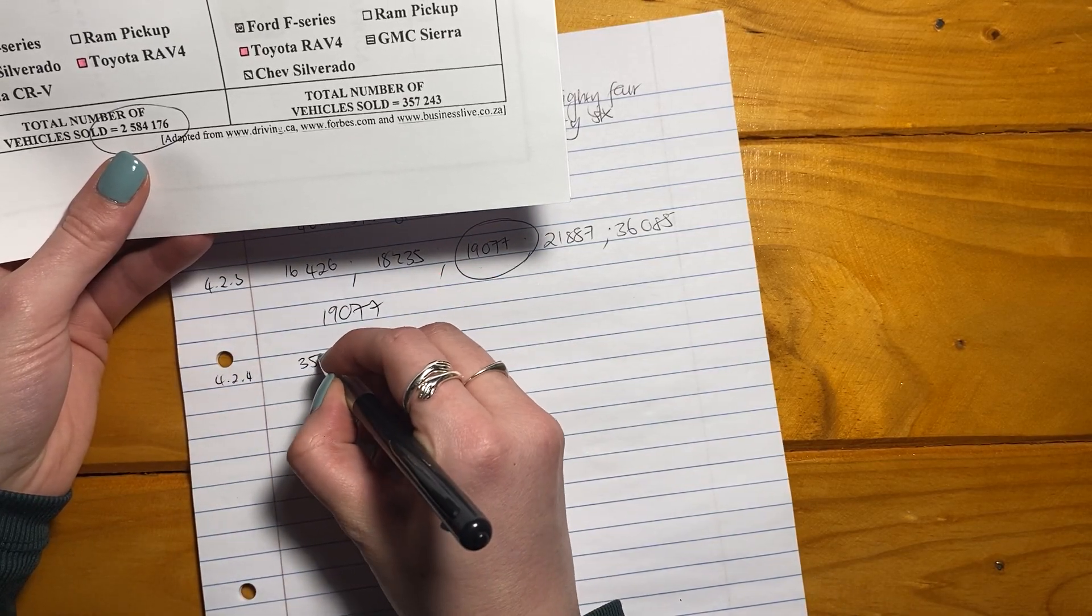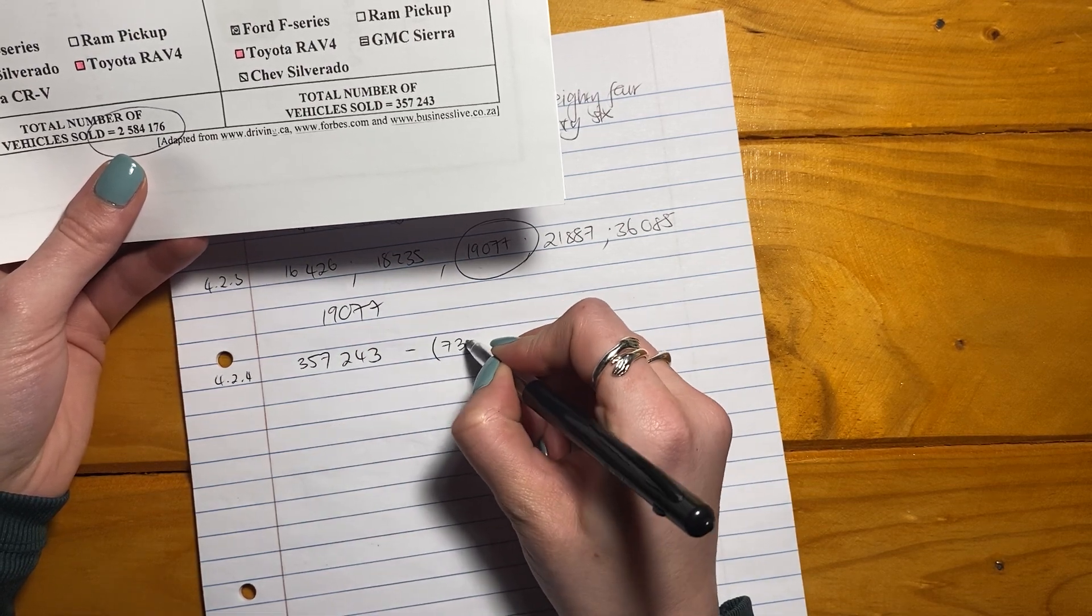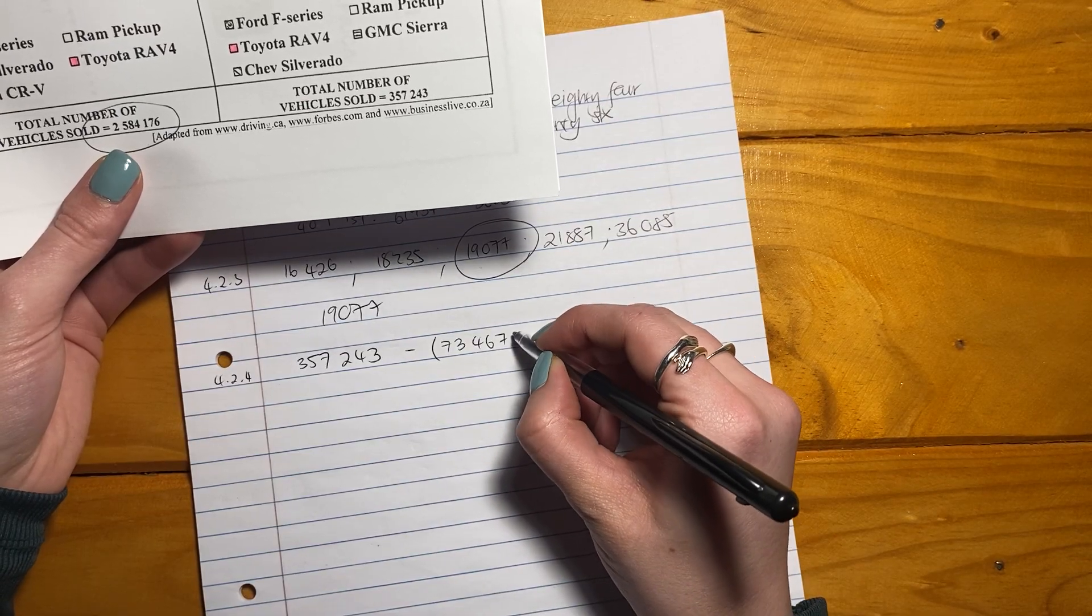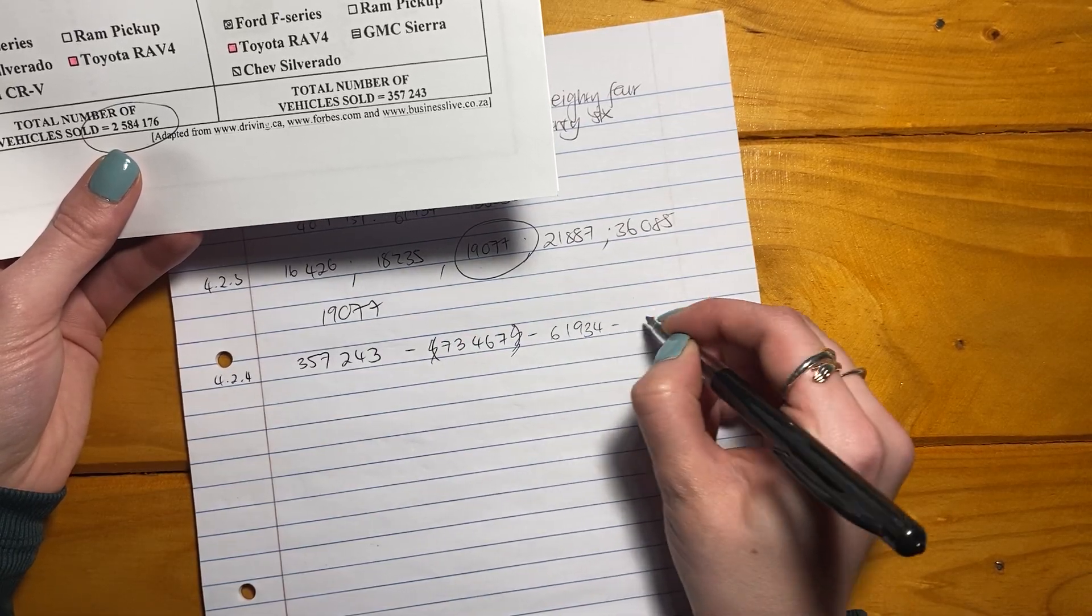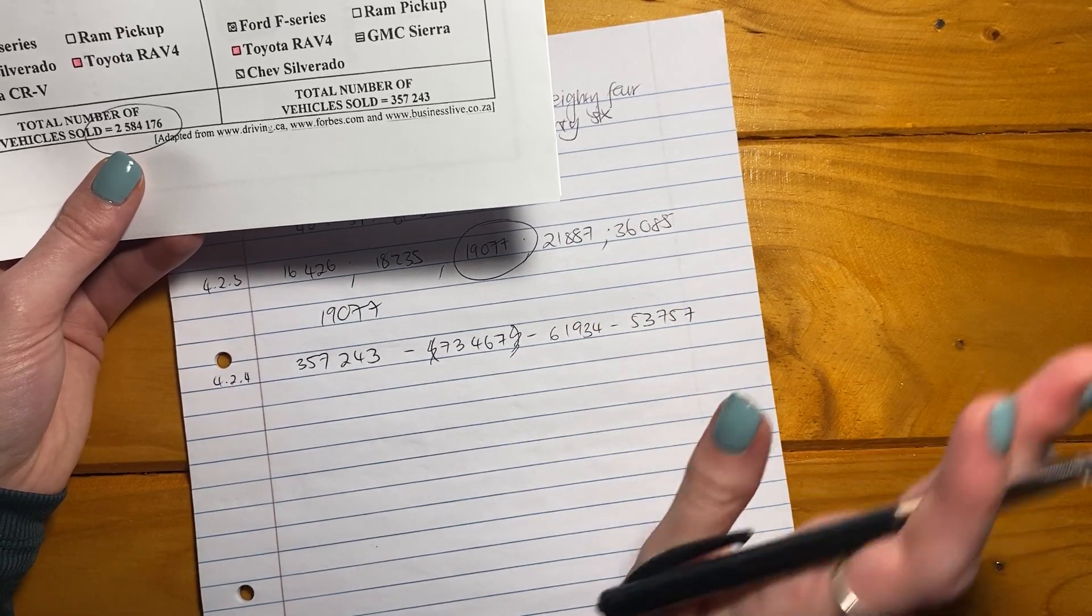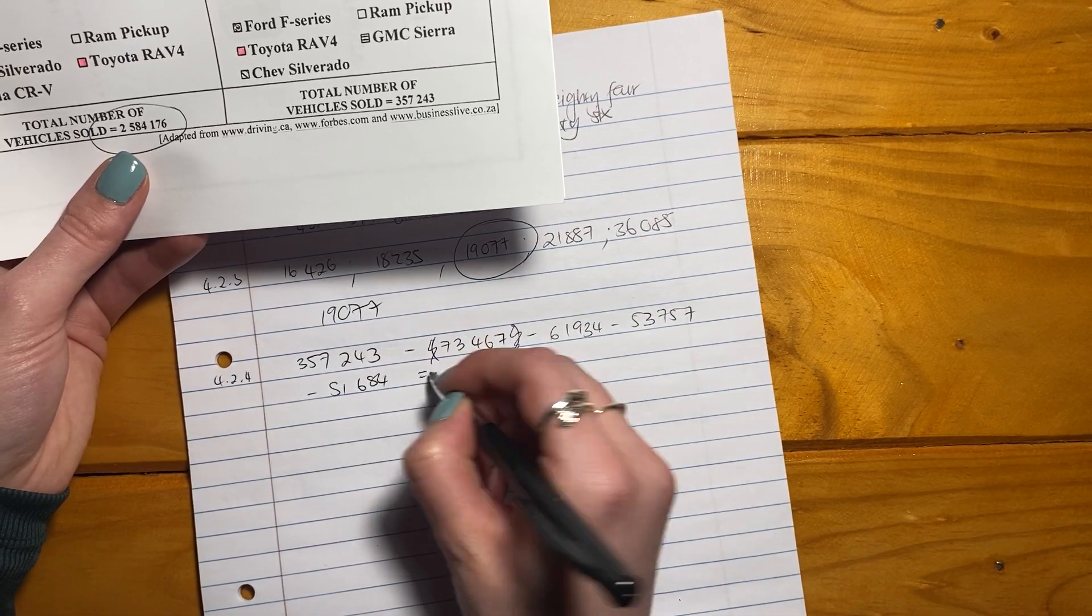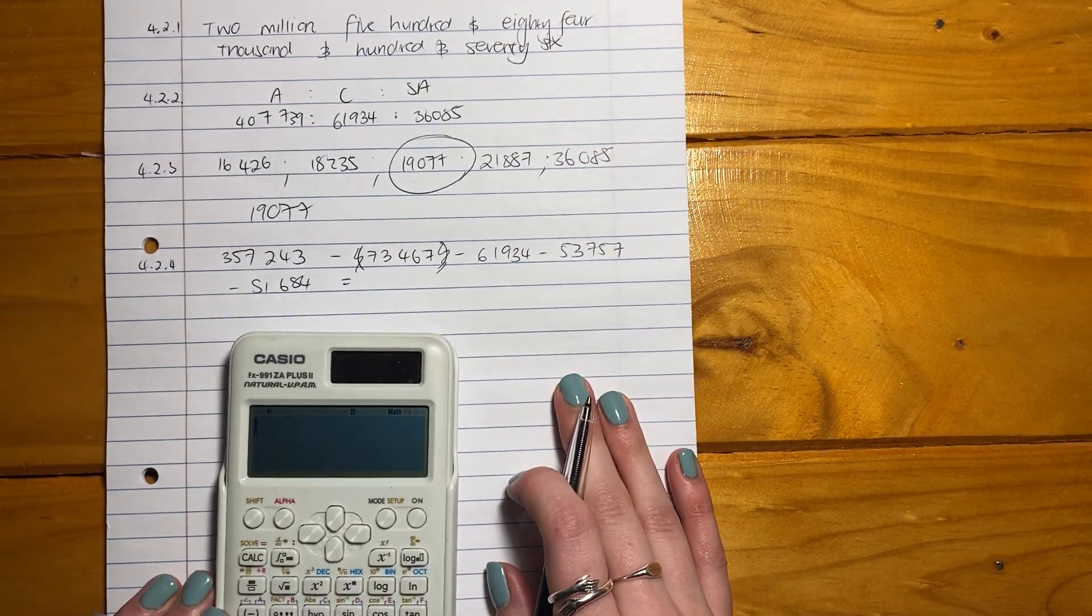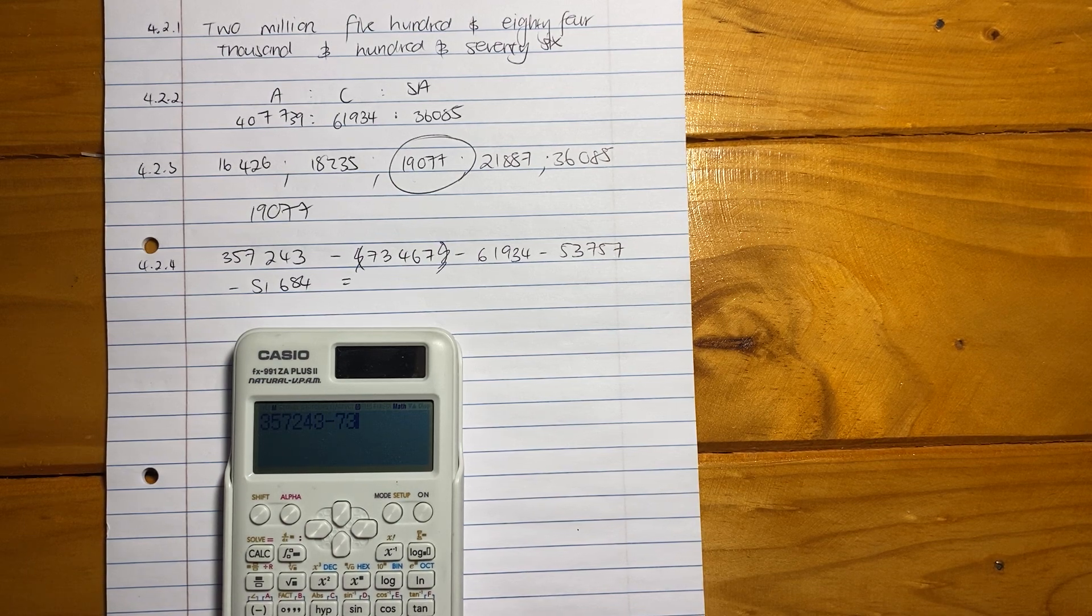We're going to say 4.2.4. We're going to say 357,243. That's the total. And we're going to subtract all of these smaller amounts. The biggest thing here is I'm just going to subtract them like this. The memo, you don't have to put these brackets in if you don't want to. I'm just going to subtract all of these here, 61,934, 51,757. The memo puts these all in brackets. I don't see. It's just more complicated than it needs to be.